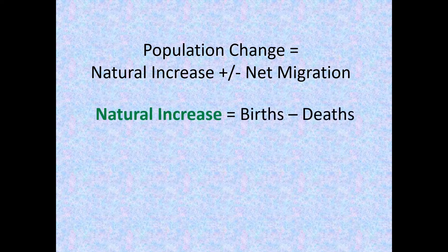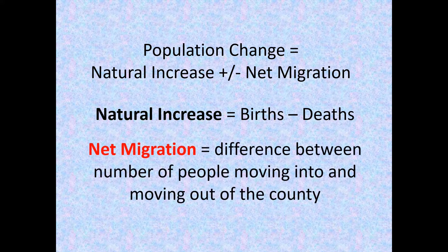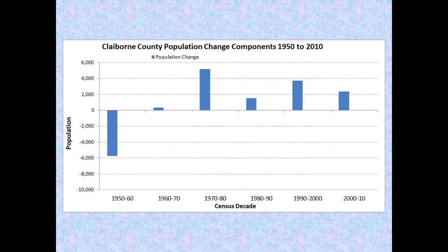Natural increase was based on the difference between subcomponents of births and deaths. Net migration was the difference between number of people moving into and moving out of the county. Note the variability and magnitude of population change, which reflected underlying dynamics or changes in the components of growth.